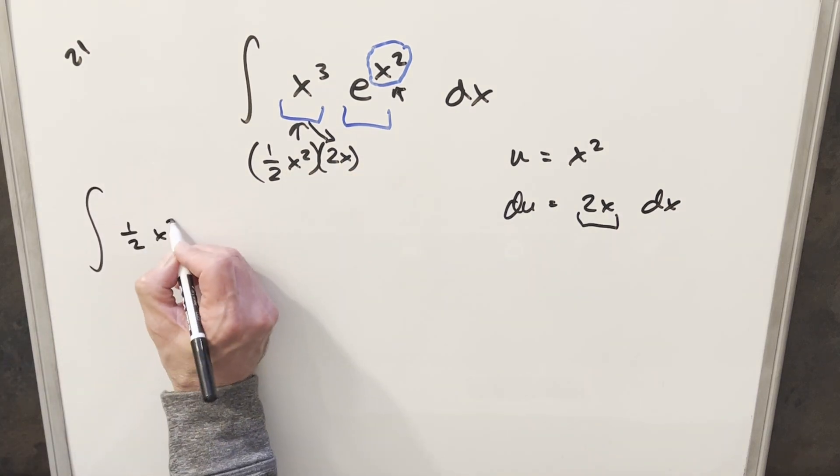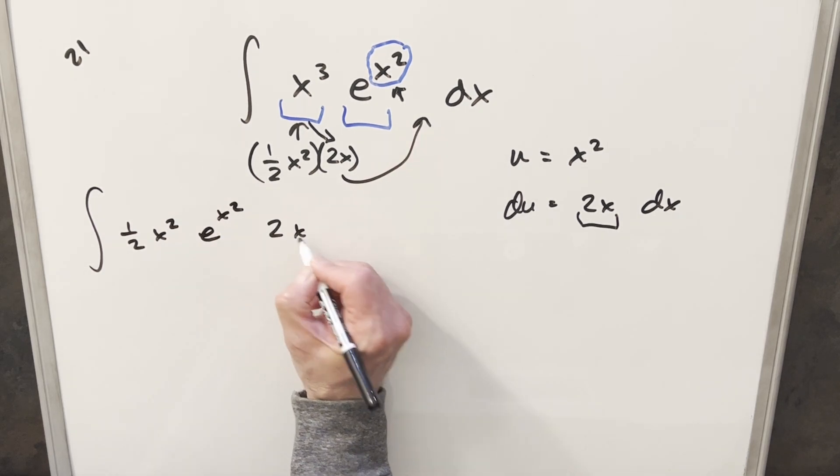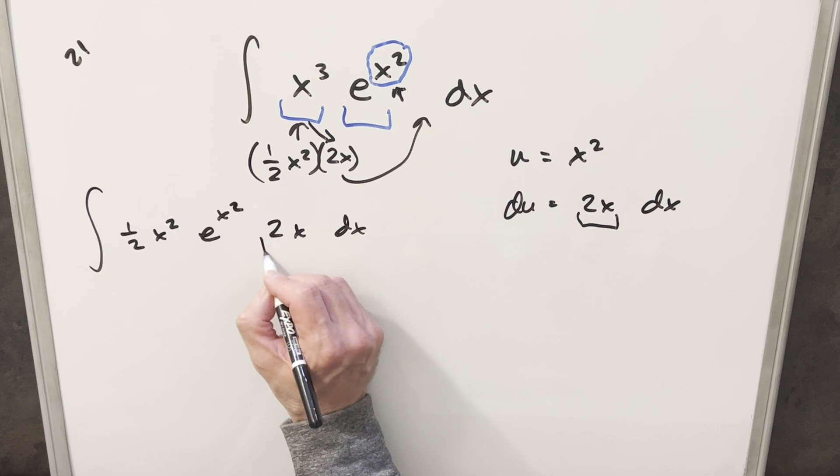So we'll have our half x squared here, e to the x squared. I'll bring this 2x by the dx just to set up, just so we have our du over here.